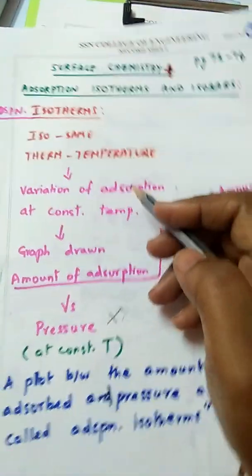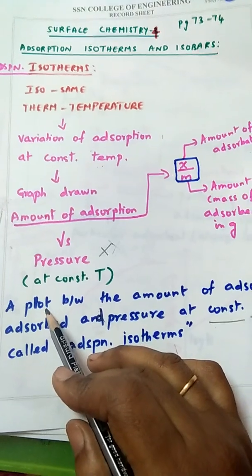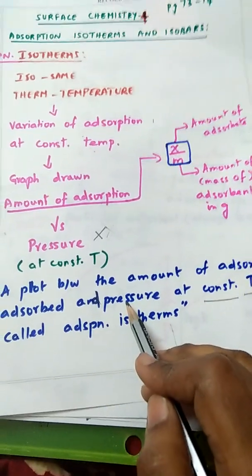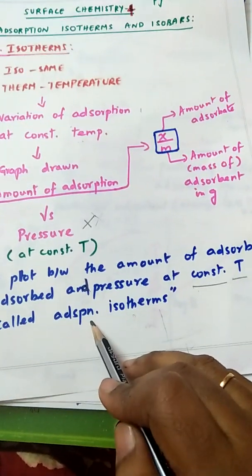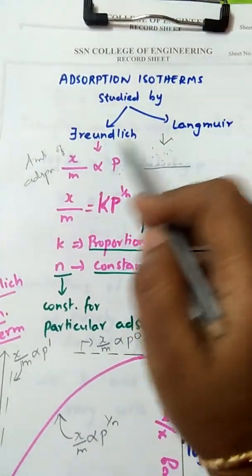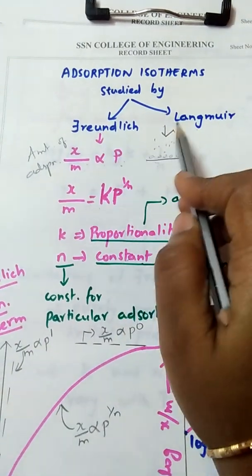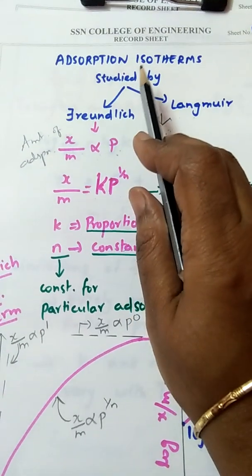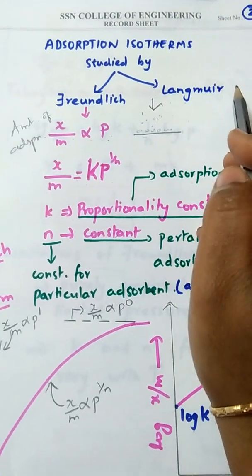So isotherms can also be defined this way: a graph between the amount of adsorbate adsorbed and pressure at constant temperature is called an adsorption isotherm. Adsorption isotherms are studied by two scientists — Freundlich and Langmuir. We are going to discuss the adsorption isotherm as studied by Freundlich, not Langmuir's isotherms.